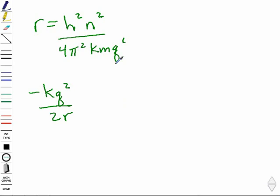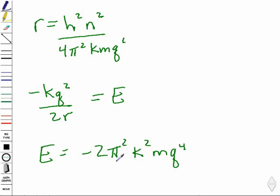By substituting this r into our energy expression, we find that we can get an energy expression represented by a negative 2 pi squared, k squared, m, q to the fourth divided by h squared, all times 1 over n squared.